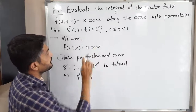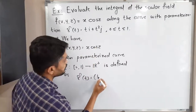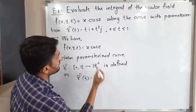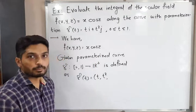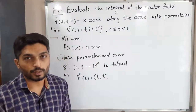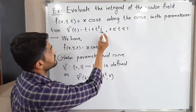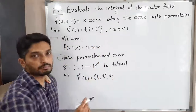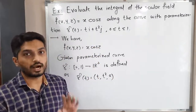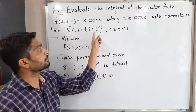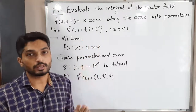...ti + t²j. So the first component is t, the second component is t², and the third component is not provided, so we consider it as 0. Therefore γ(t) = ti + t²j + 0k.